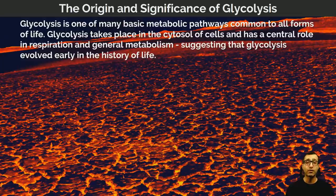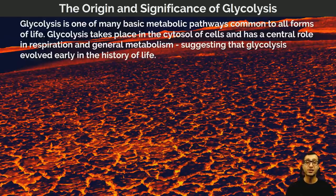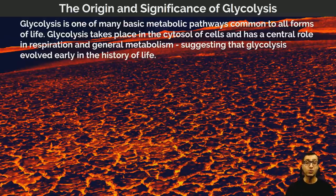Glycolysis is common to both prokaryotes and eukaryotes. The single biggest difference between eukaryotes and prokaryotes is that prokaryotes do not have internal membrane-bound organelles. At GCSE level you may have been taught that respiration occurs exclusively in the mitochondria — that's not actually the case. It is the aerobic parts of respiration which occur in the mitochondria, and the anaerobic parts which occur in the cytoplasm. Prokaryotic cells therefore use glycolysis to release energy from glucose.